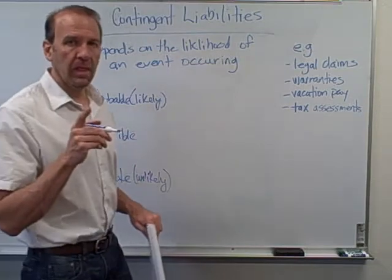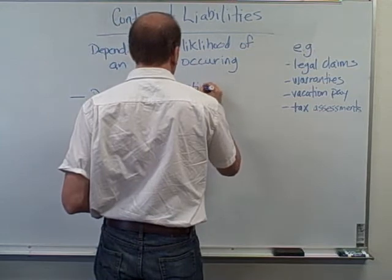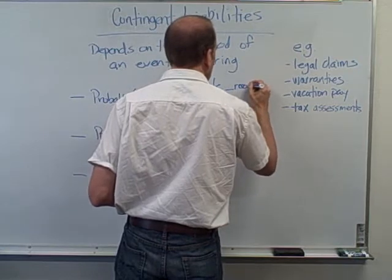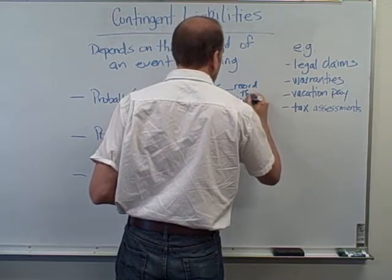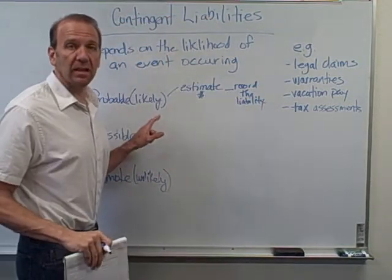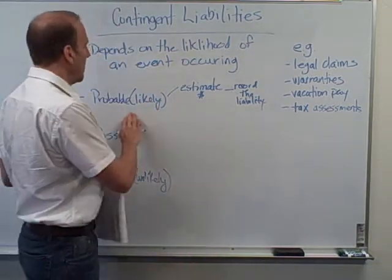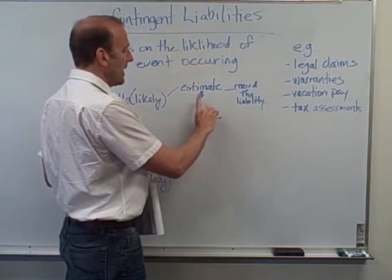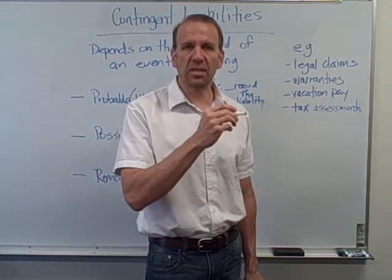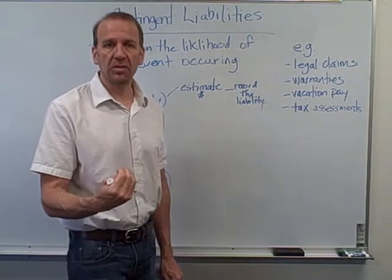If we determine that this is probable and we can estimate the dollar amount, then we're going to record the liability. We'll get our lawyers involved to see if it's likely or not. If it's likely and we can estimate the dollar amount, we will record the liability — probably a loss, some sort of expense or decrease of our income. And then we'll credit the liability, showing that we owe money.